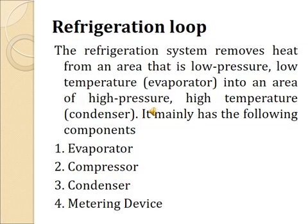The refrigeration loop removes heat from the low pressure, low temperature area — the space we want to condition — and transfers it to a high pressure, high temperature area. The main components of the refrigeration cycle are the evaporator, compressor, condenser, and metering device.